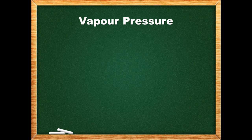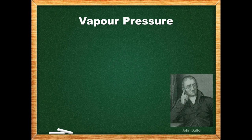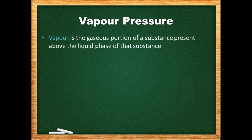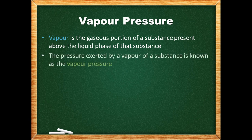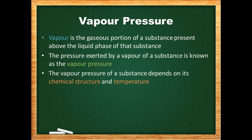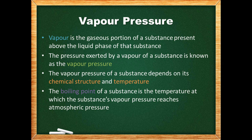Based on everyday experience, we know that puddles of water eventually evaporate even though the temperature is well below water's boiling point. English chemist John Dalton found that even in a sealed container some of the water evaporates. The term 'vapor' describes the gaseous portion of a substance present above the liquid phase. The pressure exerted by a vapor is known as the vapor pressure, dependent first on the substance's chemical structure and second on the temperature. At a given temperature there is a maximum value the vapor pressure can reach. When the vapor pressure reaches atmospheric pressure, the liquid will begin to boil — the temperature at which this occurs is called the boiling point.